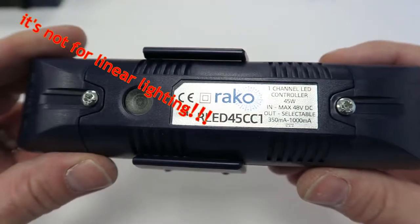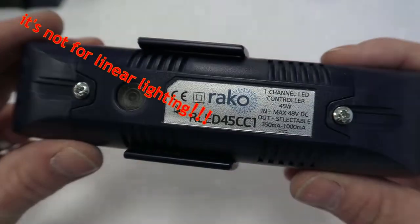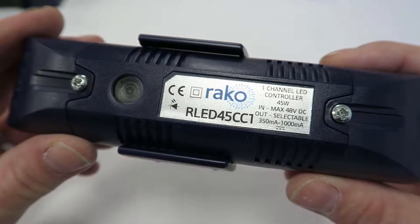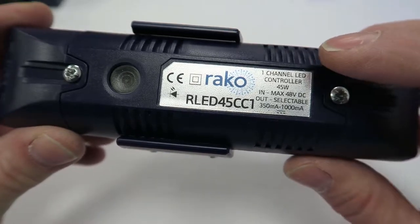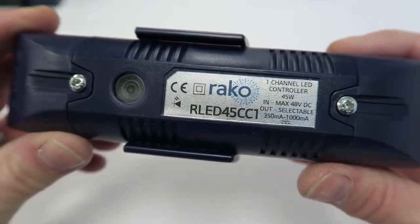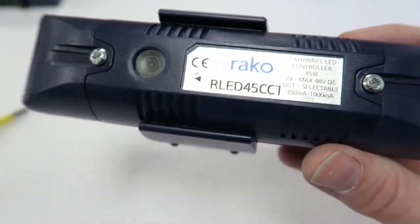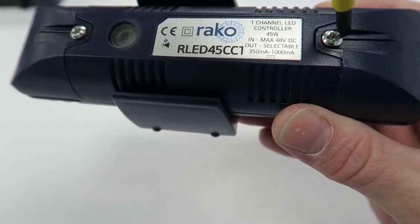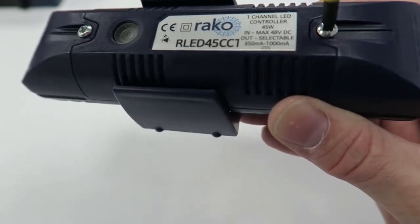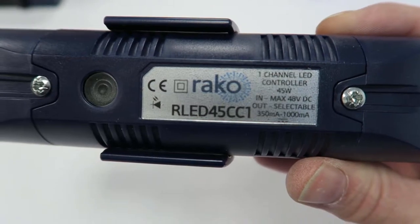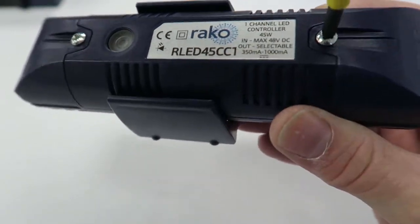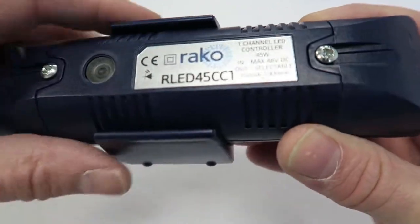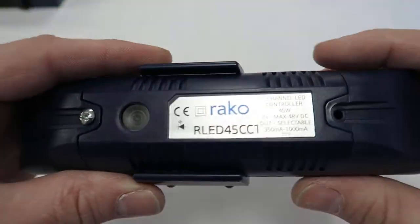And next on our list is for linear lighting. They have two different versions of this. This one's an RLED 45, and I believe there's a higher wattage one as well. This is a maximum of 45 watts, it can control LED strip basically. This one is selectable as well, actually, no, this isn't, sorry, this is a constant current controller. So this basically can control LEDs directly without having to use a driver.